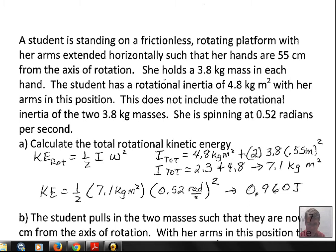Mass times radius squared, that's the rotational inertia for one of the 3.8 kilogram masses. We find that the total is 2.3, the result from the two 3.8 kilogram masses. 2.3 plus the person's body 4.8 gives us 7.1 kilograms meters squared.